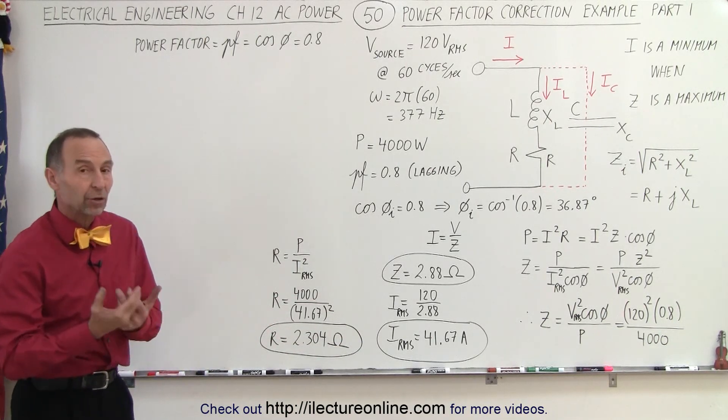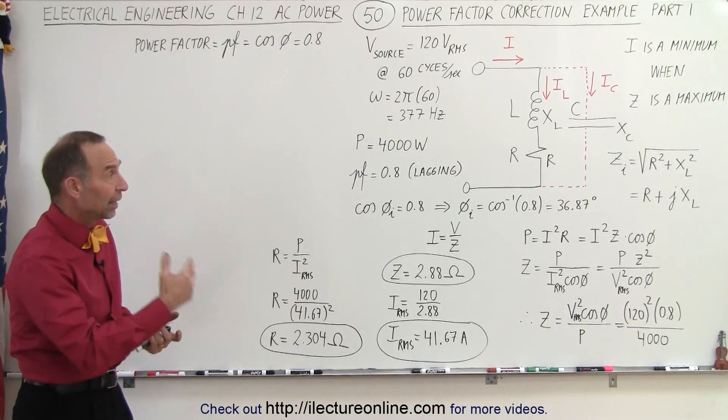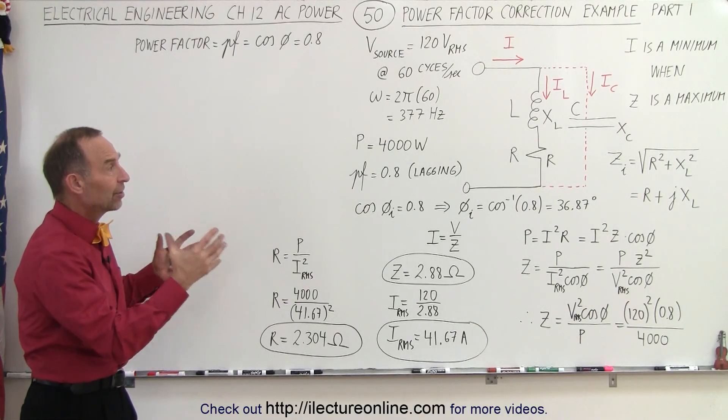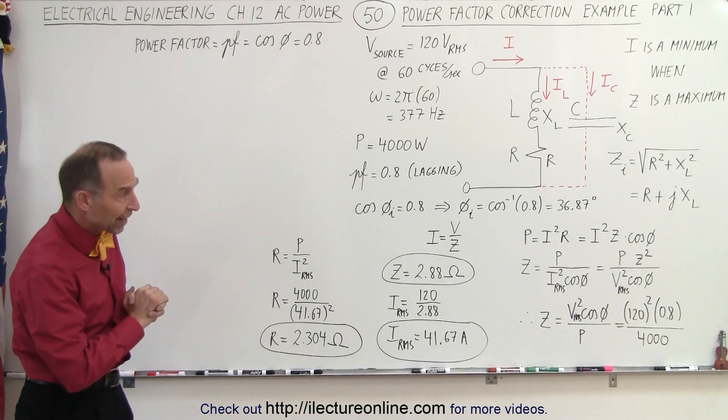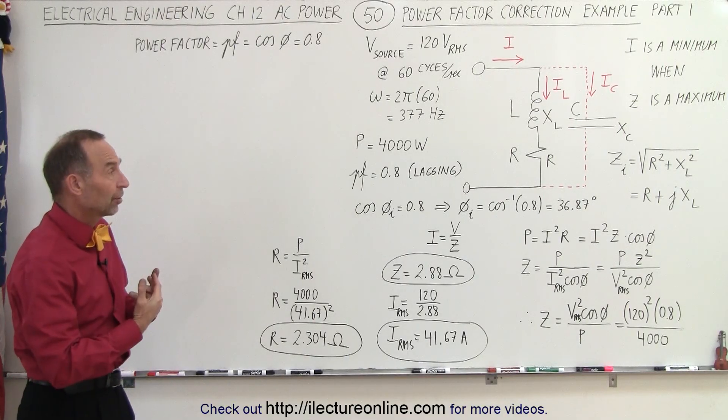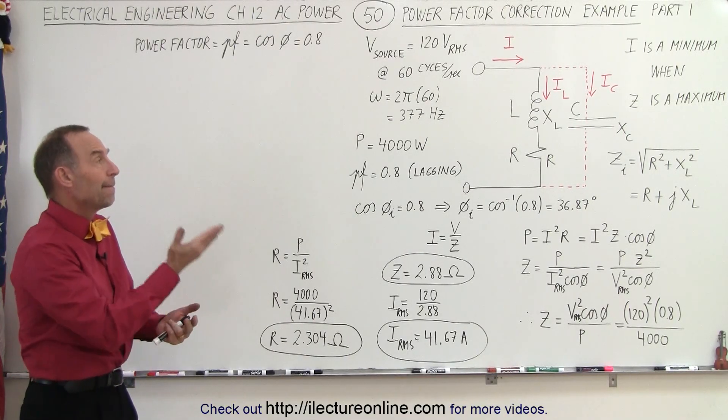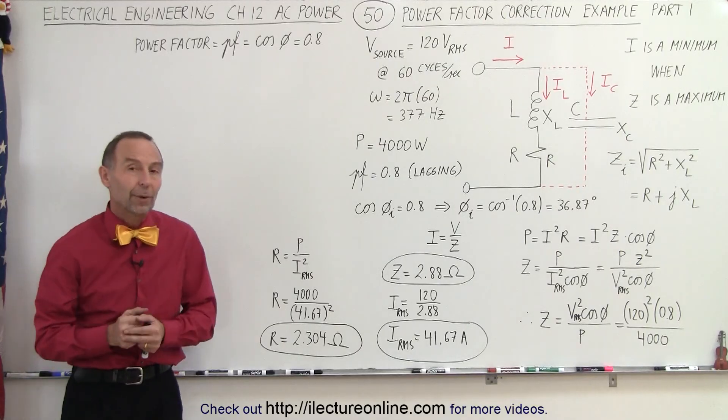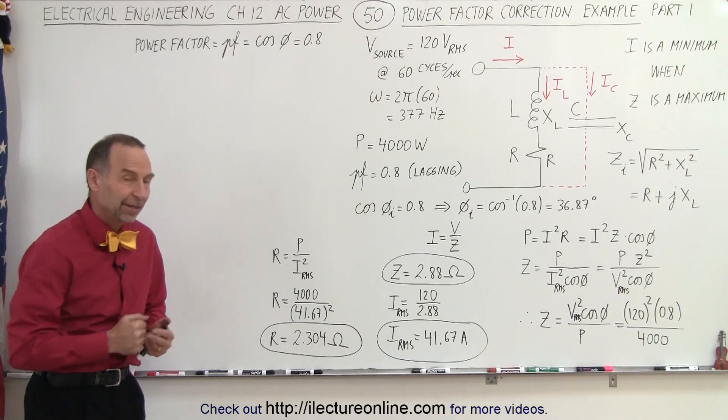And now the next step would be to find the correct capacitance in order to maximize what we call the power factor, in order to maximize the impedance, and therefore minimize the current required by the circuit. And that is how it's done.